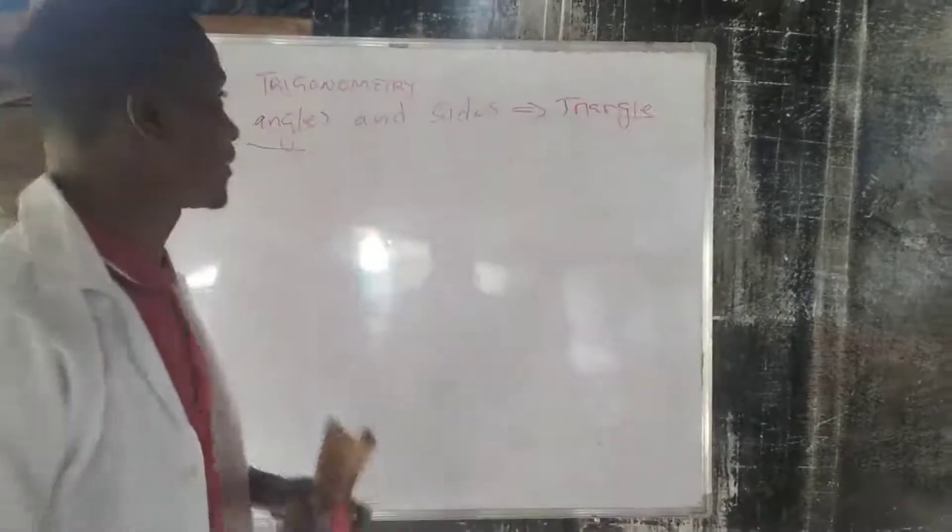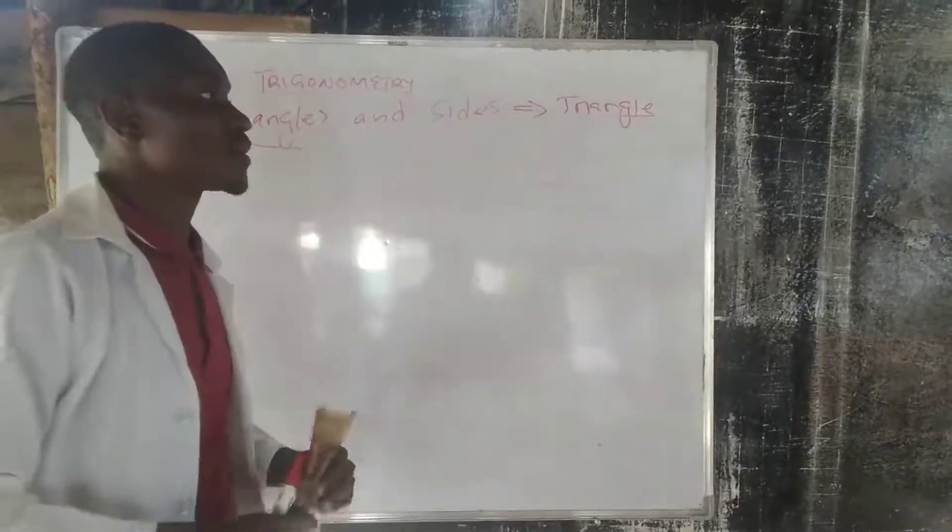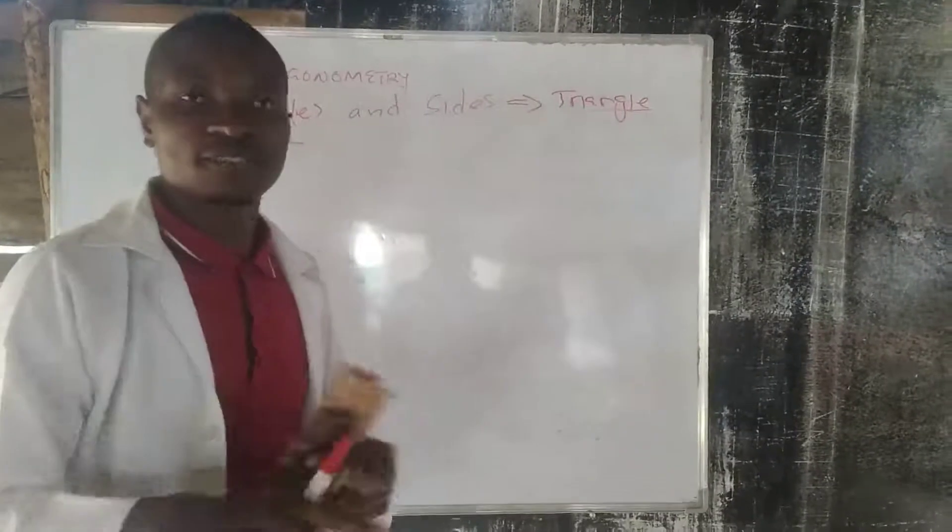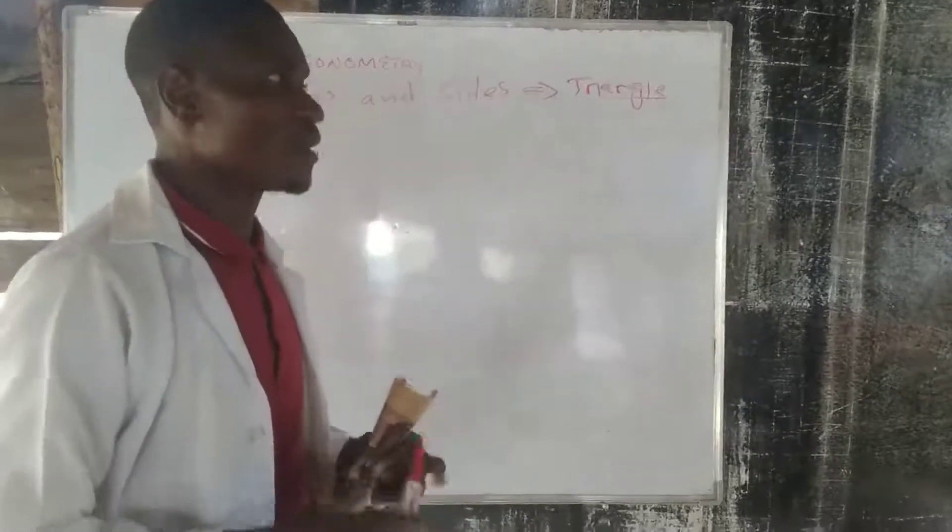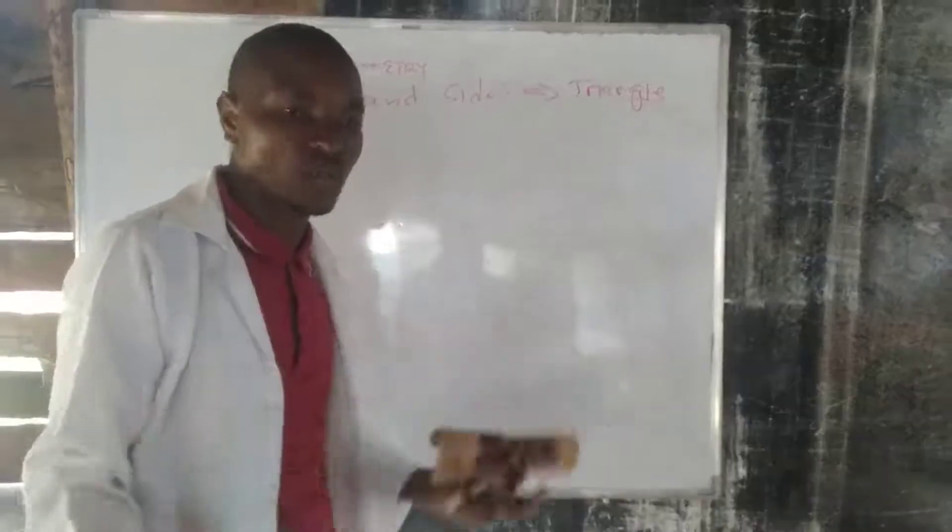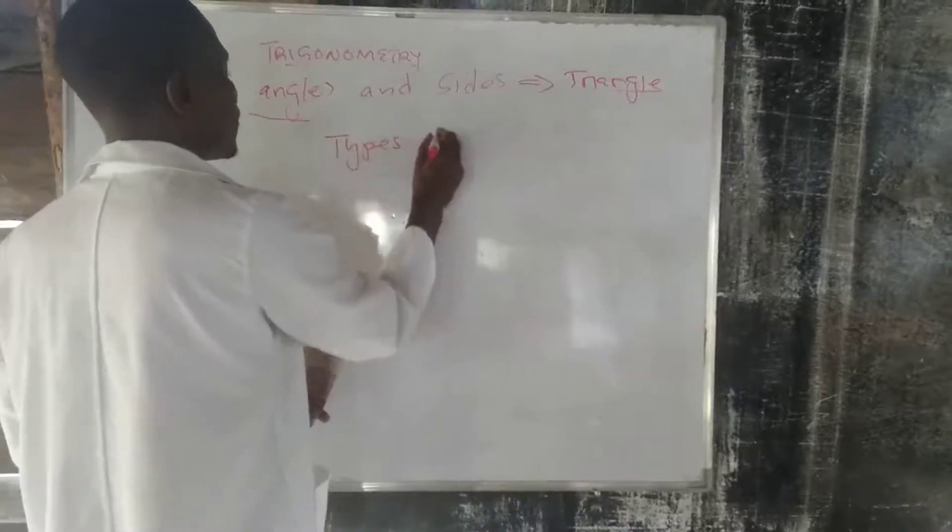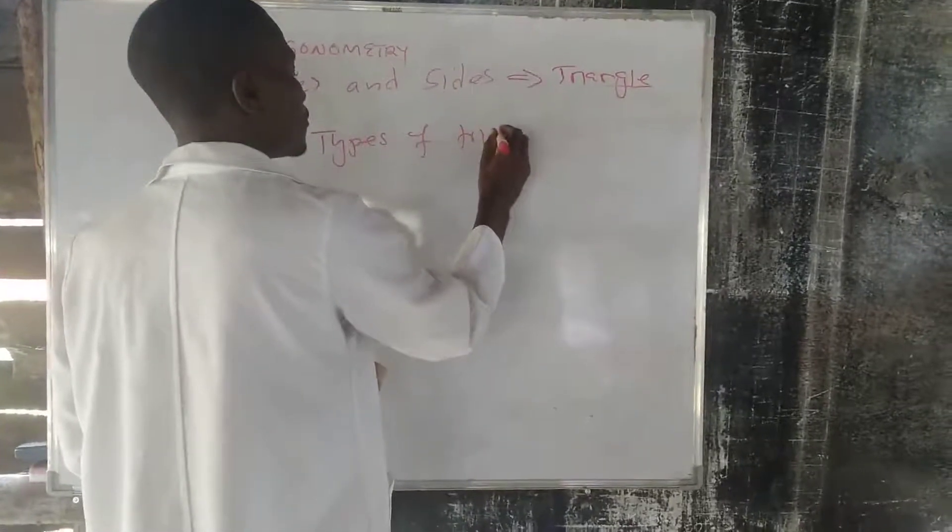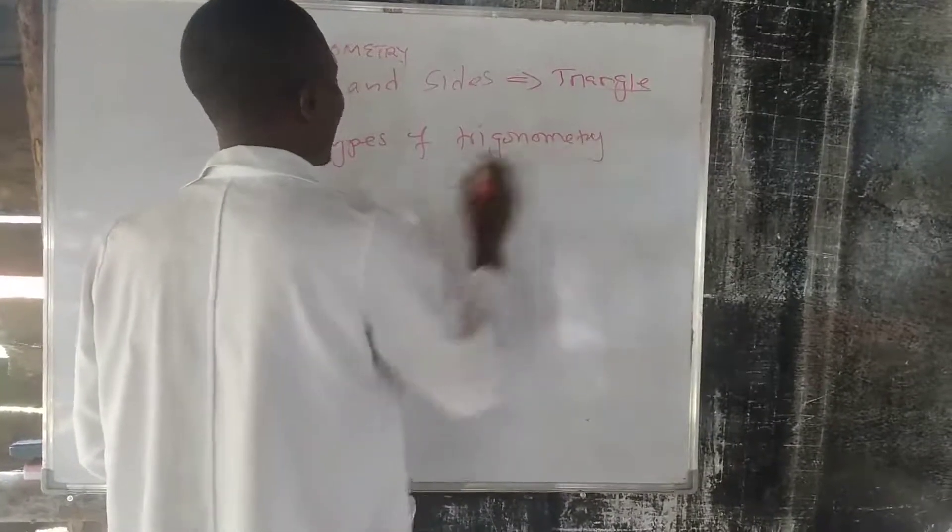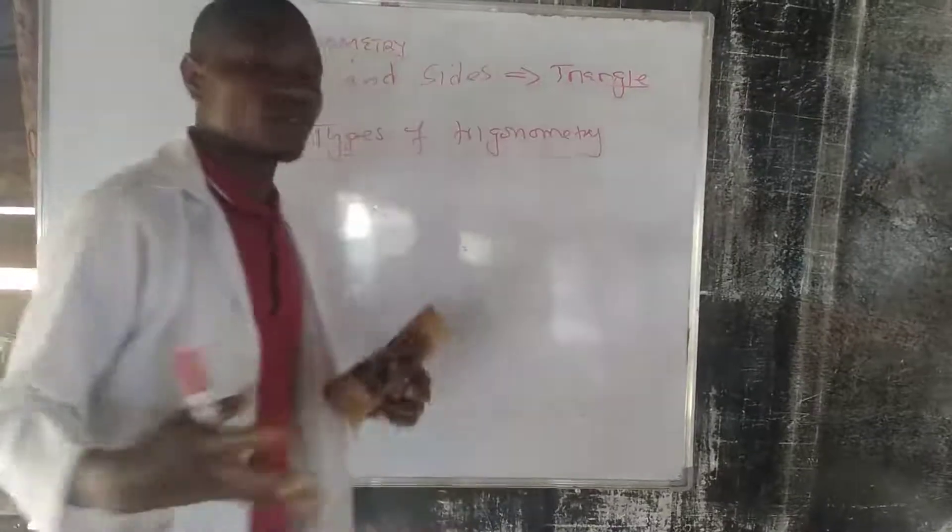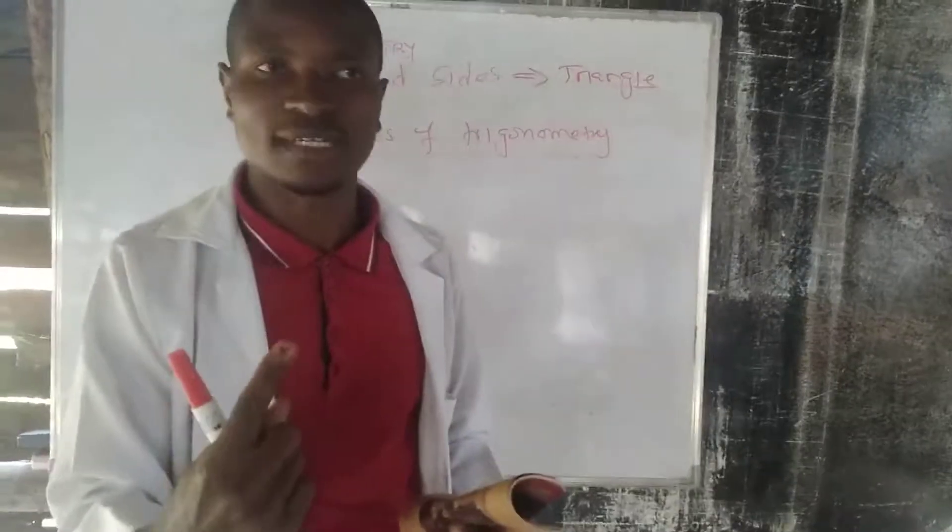So, trigonometry is a topic which concerns angles and sides of a triangle. Now, with that said, trigonometry can be solved if we actually divide it in two kinds of categories. So, types of trigonometry, this means that there is only one trigonometry that you need to understand.